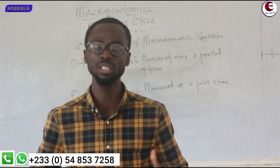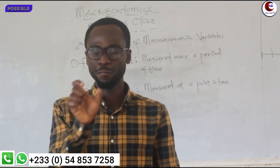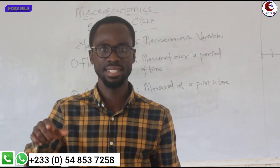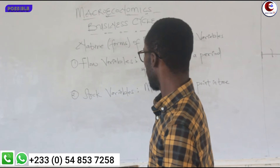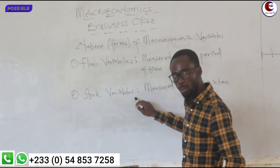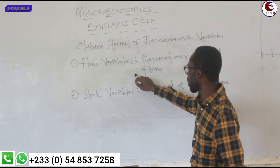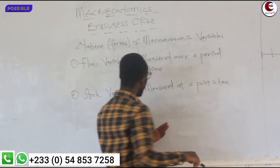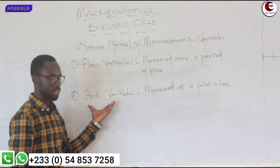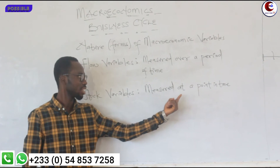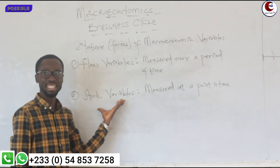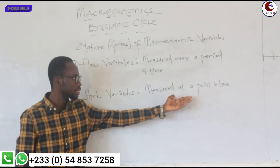They can behave in two ways. They will either be in a flow concept or in a stock concept. So the variables would either be flow variables or stock variables. Flow variables are measured over a period of time, and stock variables are the variables that are measured at a point in time.